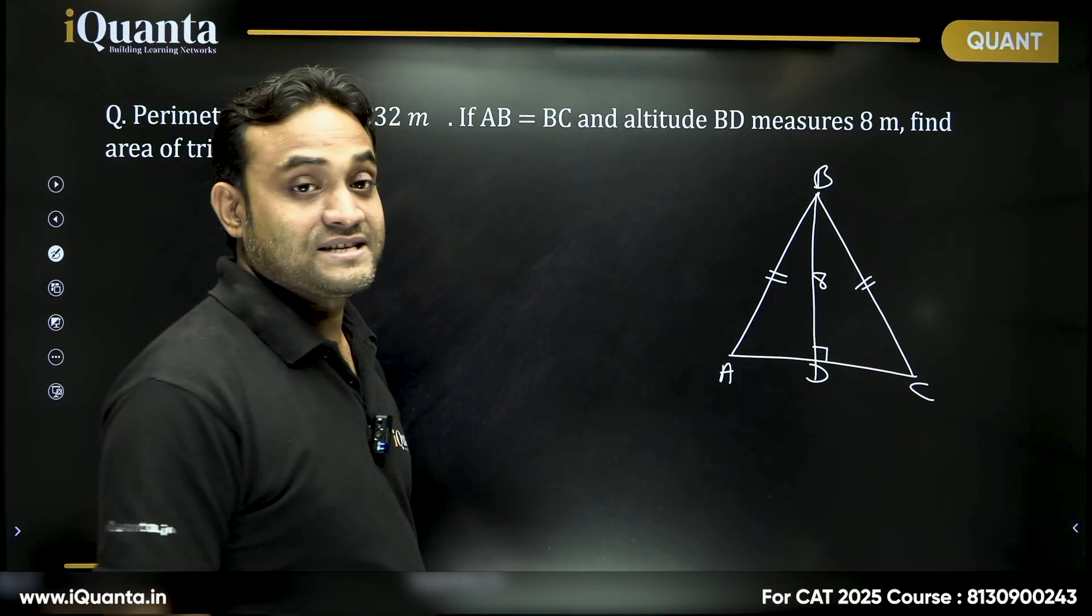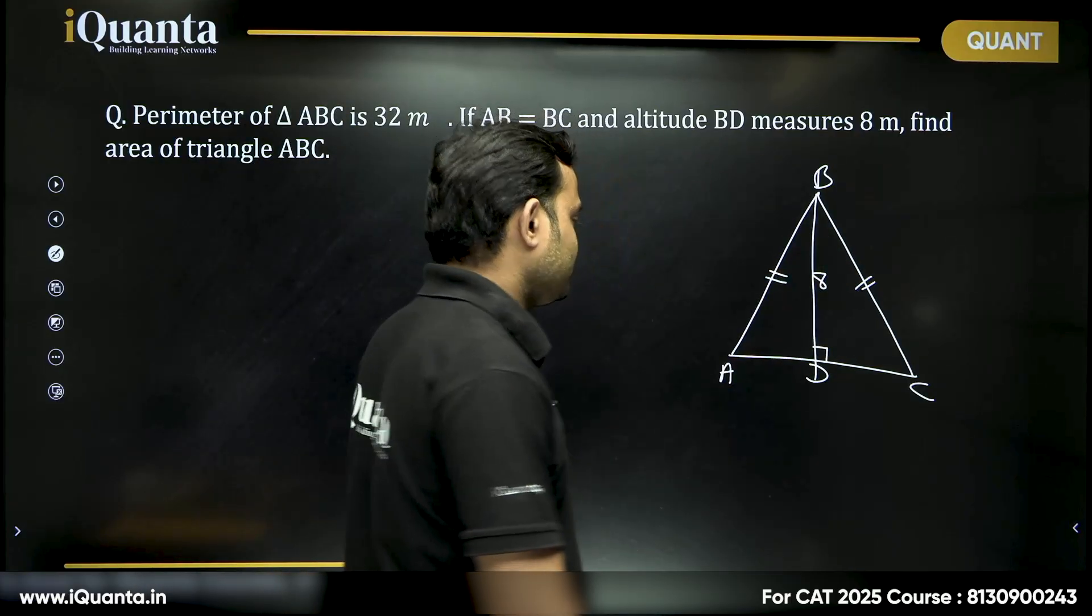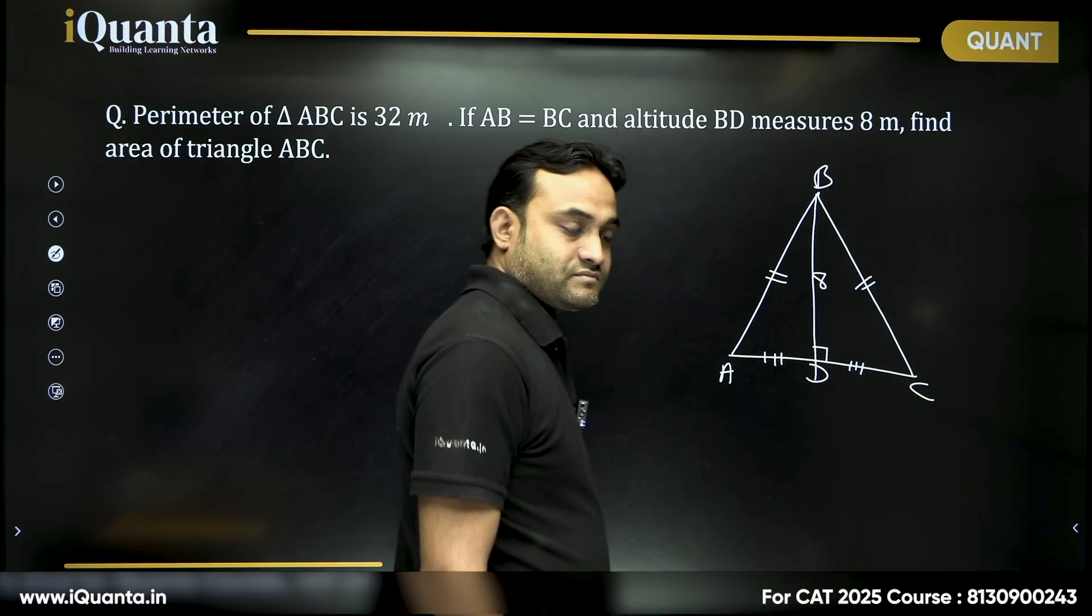Now can I say as this is an isosceles triangle AB is equal to AC, AD will also be equal to DC, right?